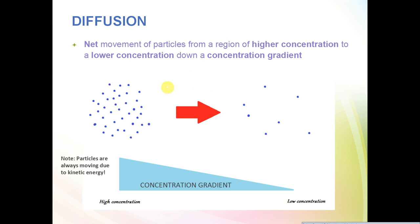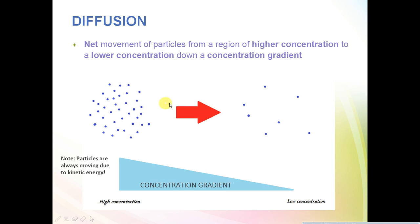Starting off with diffusion — definition-wise, it's the net movement of particles from a region of higher concentration to low concentration, down a concentration gradient. If you take a look at this diagram here, you can see that the blue dots represent particles, and on the left-hand side you have much more of them than on the right-hand side. Because concentration is just how much of a substance you have per volume, there is much more concentration of these blue particles on the left-hand side, so you've got a concentration gradient that goes down from the left to the right.